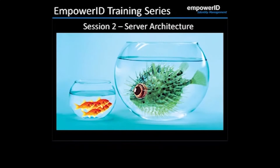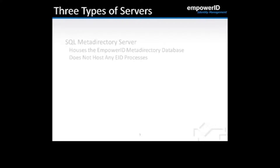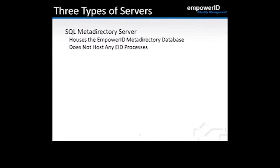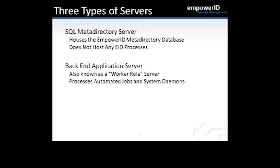This particular video in the series will cover server architecture. Empower ID server architecture is comprised of three basic types of servers. The first is our SQL Meta Directory server, which houses our Empower ID Meta Directory database and does not host any Empower ID processes. The next is our back-end application server, also known as a worker role server, which processes automated jobs and system statements.